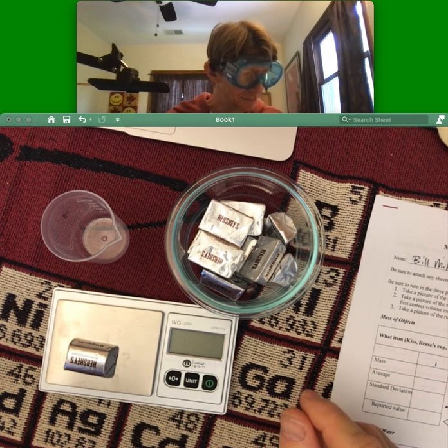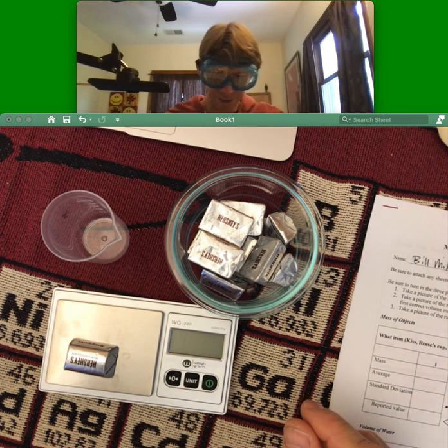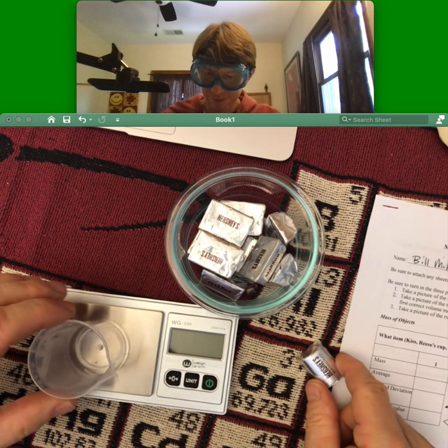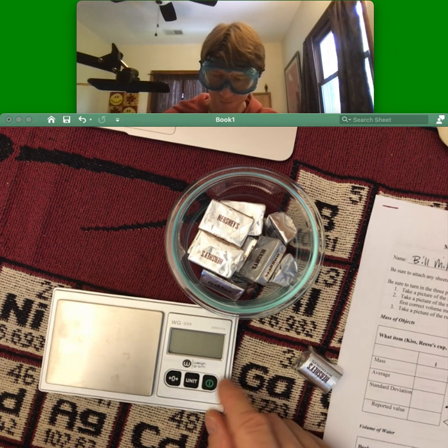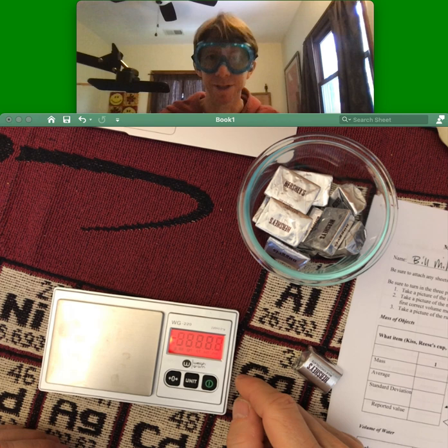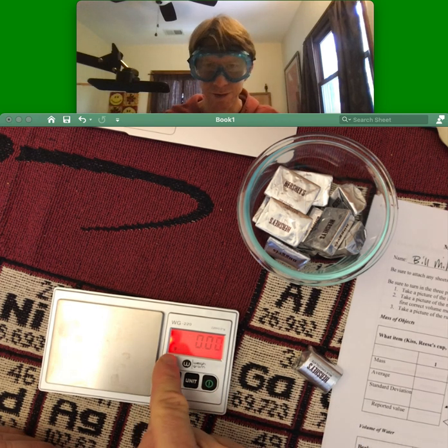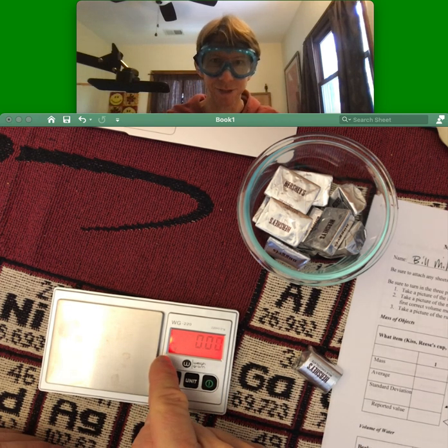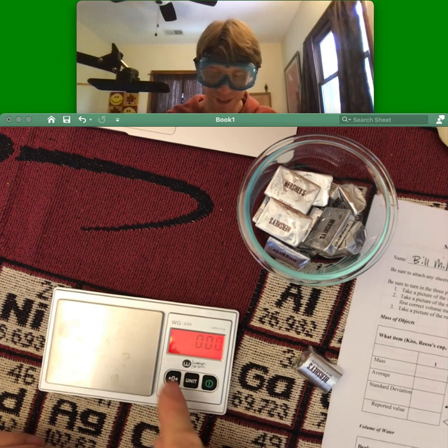All right, and it says place a clean, dry plastic beaker on the scale. Well, you can turn it on, you don't have to actually. But wait for that little circle to appear before you do any measurements ever or change anything. So it's at zero.